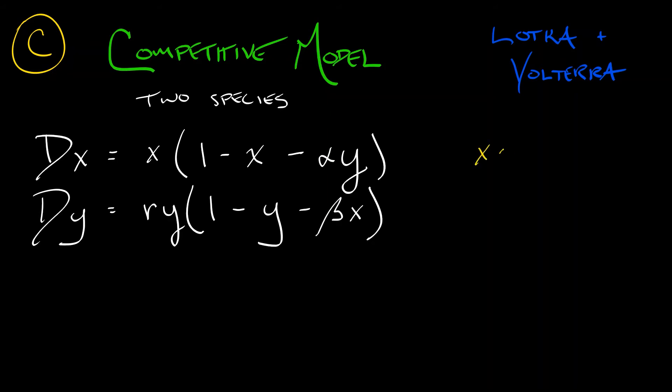These species are in competition. So think of X as being humans, and Y as being evil killer robots. And these two populations are in competition, and we want to track the sizes. Now, we've got a couple of constants here. Let's make sense of those.